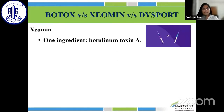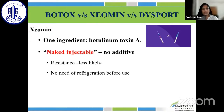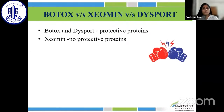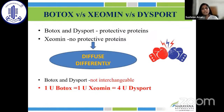Comparing Botox, Xeomin, and Dysport: Xeomin is a one-ingredient, naked injectable with no additives, making it least resistant and requiring no refrigeration before use; however, it has the slowest onset of action at four days. Dysport has an onset of 24 hours and Botox 72 hours. Botox and Dysport have protective proteins while Xeomin does not, causing them to diffuse differently and accounting for the difference in bioequivalence. To reiterate: Botox and Dysport are not interchangeable, but Botox and Xeomin are — one unit of Botox equals one unit of Xeomin, which equals four units of Dysport.